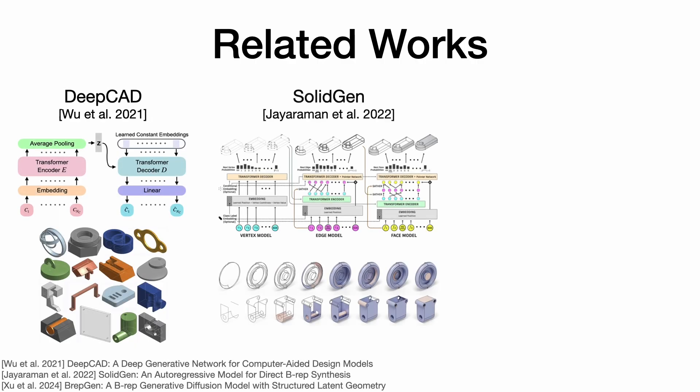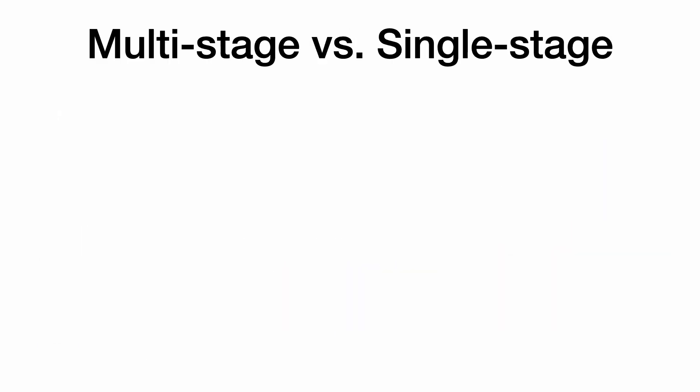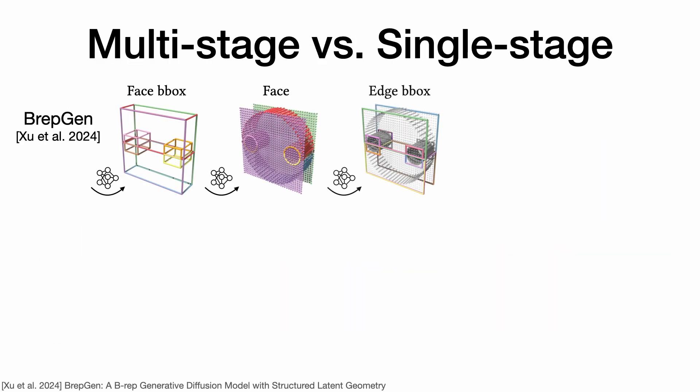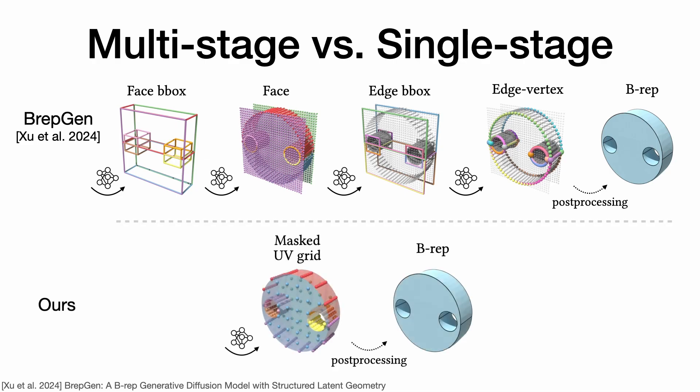However, the highly irregular and complex structure of B-reps presents significant challenges for generative modeling, often necessitating intricate multi-stage generation pipelines. We instead propose a single-stage generative model for B-reps.